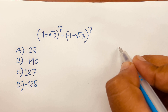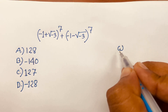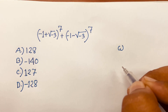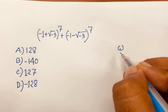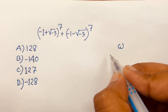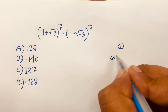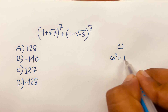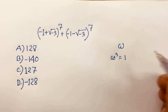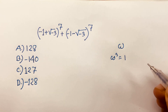Here is a symbol. This symbol's name is omega. It is a complex number. First of all, you know that omega power 3 is equal to 1.